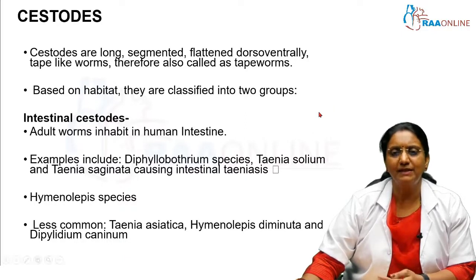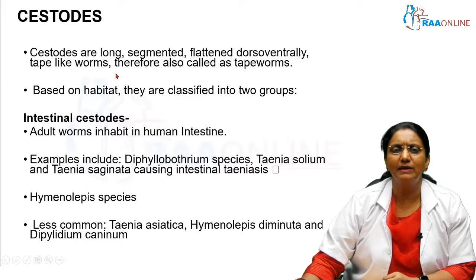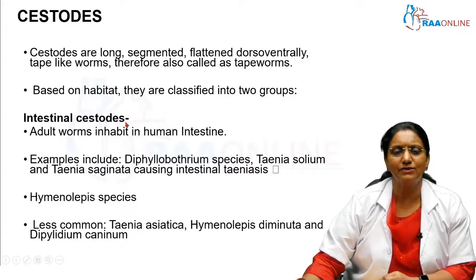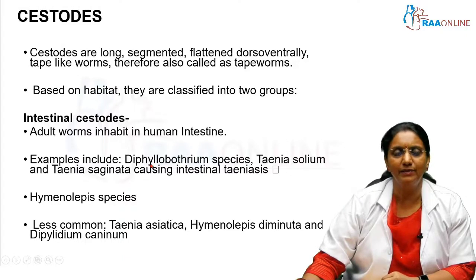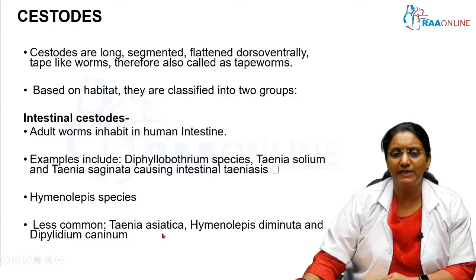Next, a few more points about cestodes before we go to the individual infections. Cestodes are long, segmented, dorsal-ventrally flattened worms that look like a measuring tape — hence called tapeworms. Based on habitat, cestodes are classified as intestinal cestodes and soft tissue cestodes. Intestinal cestodes present in the human intestinal tract include Diphyllobothrium species, Taenia solium, Taenia saginata — which cause intestinal teniasis — Hymenolepis species, Taenia asiatica, Hymenolepis diminuta, and Dipylidium caninum.